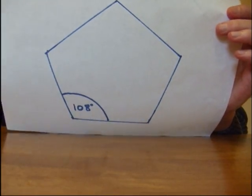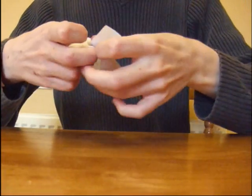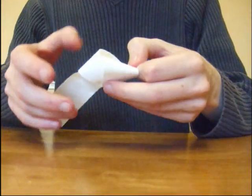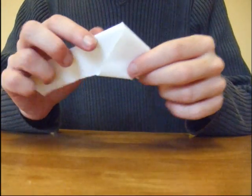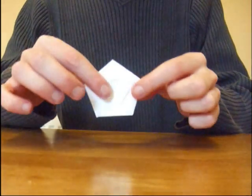First of all, we need to make this. Now, I'm going to show you an easy way to make a regular pentagon. All you do is take a strip of paper like this and you tie a loose knot in it and gently pull that tighter. If you do that, you will get a perfect regular pentagon. Cut off these edges here and you'll get something like this.